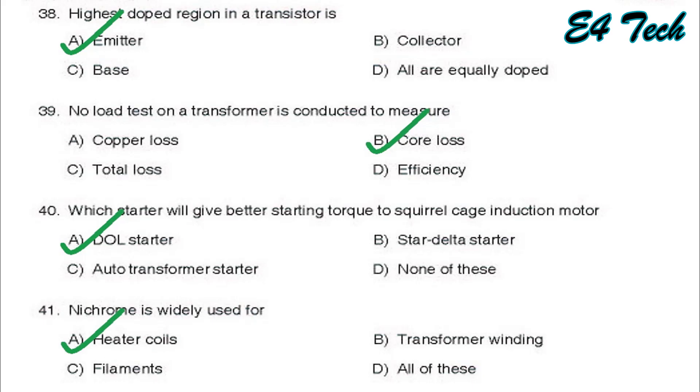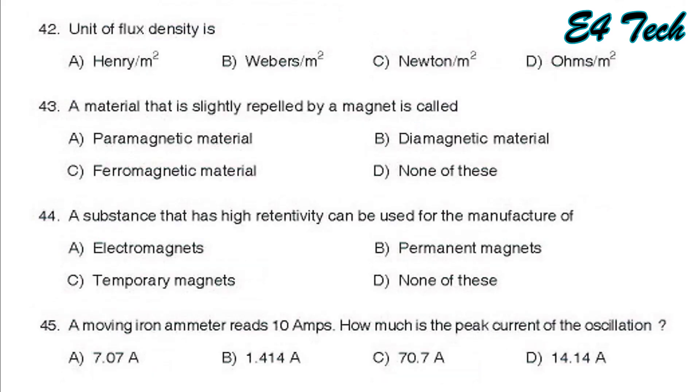Next, unit of flux density. Flux density unit weber per meter square or tesla. That is option B. Next, a material that is slightly repelled by a magnet. That is diamagnetic material, option A.